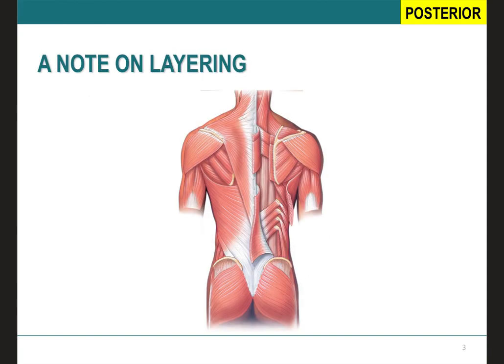Before we get started discussing the different types of muscles, it is important to understand that there are several layers to our body. When looking to see if a muscle is going to be deep or superficial, try to see if you can see bones. If you can see bones, those muscles are going to be deep. If you are unable to see many bones, like on the left side here, then those muscles are going to be more superficial.